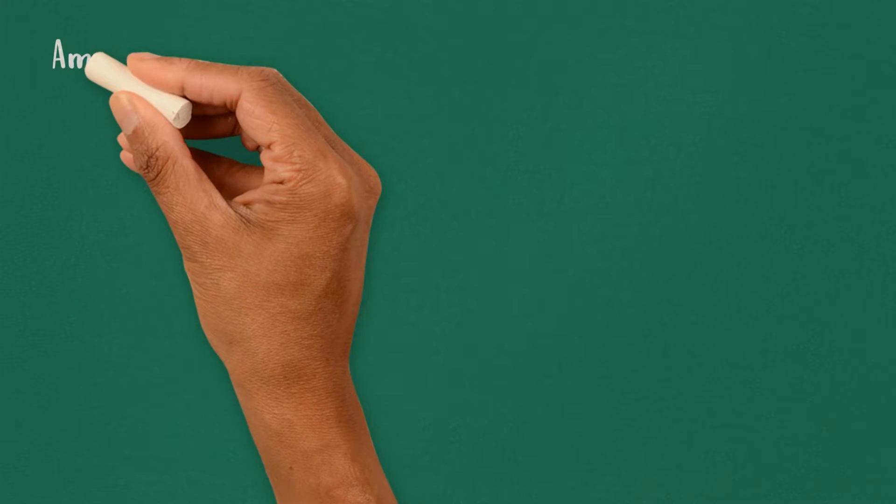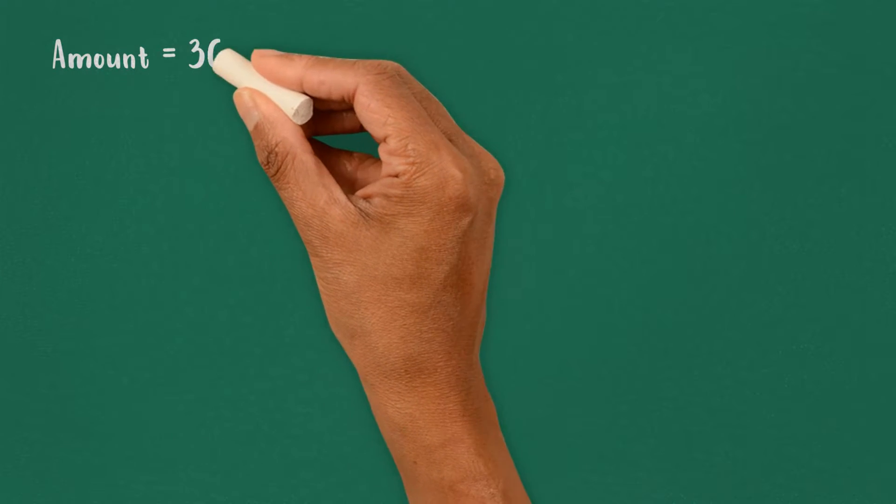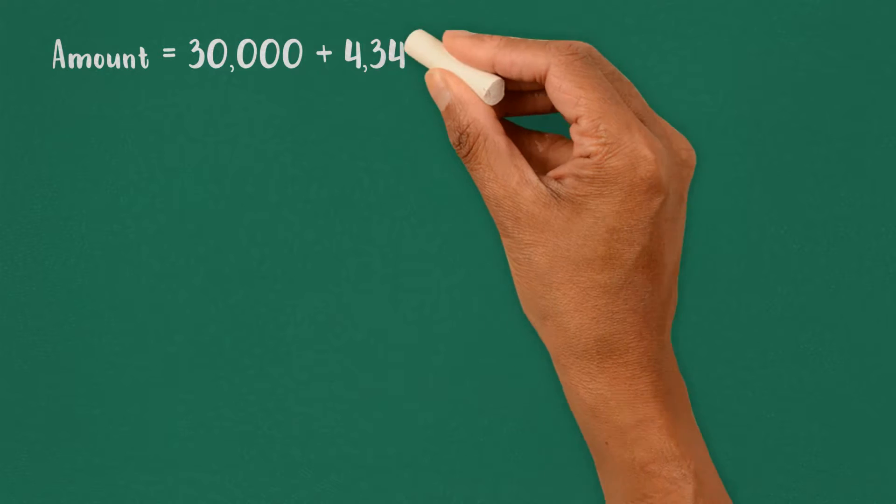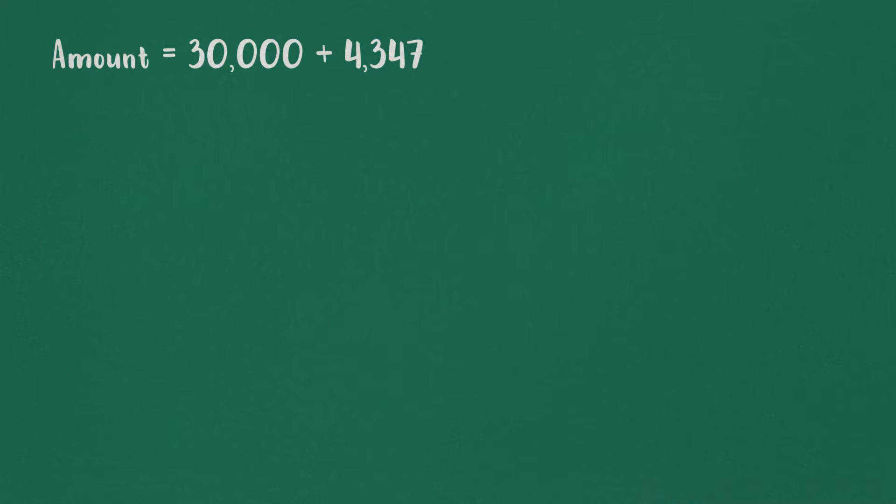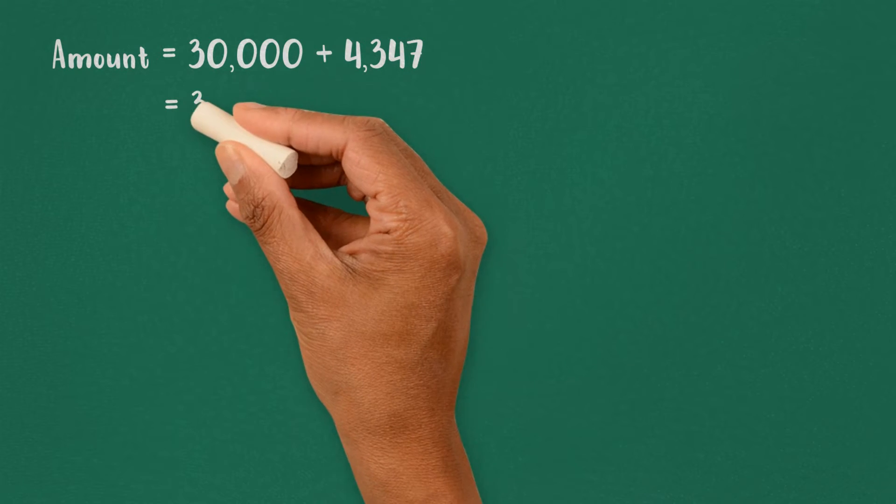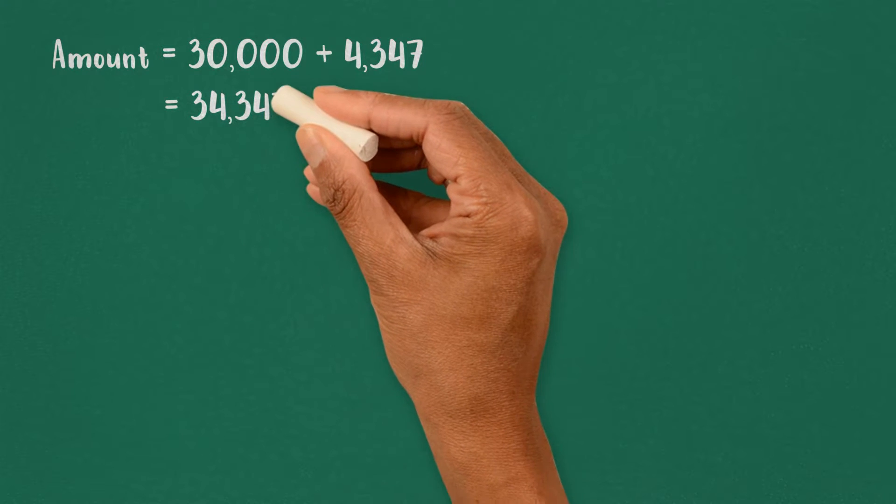Total amount is the sum of principal amount and interest, so 30,000 plus 4,347 is 34,347.